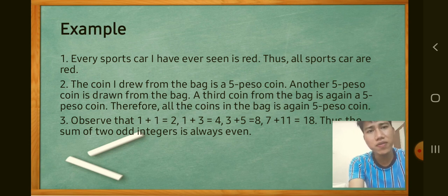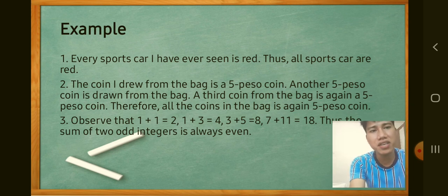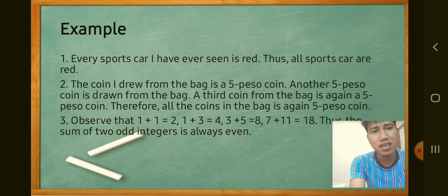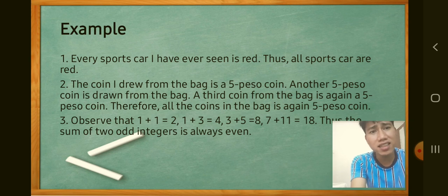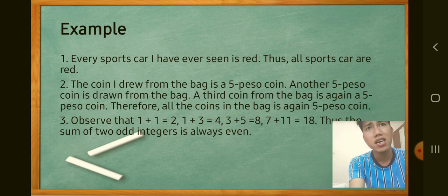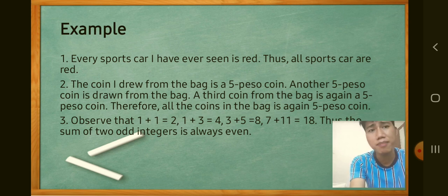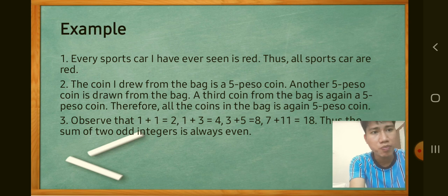Second example: the coin drawn from the bag is a 5-peso coin. A second coin drawn is also a 5-peso coin. A third coin is again a 5-peso coin. Therefore, all coins in the bag are 5-peso coins. This is inductive reasoning — but there is a tendency that other types of coins might also be in the bag. That's why inductive reasoning uses conjecture: the conclusion may or may not be correct.